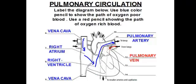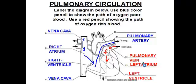Once the blood leaves the pulmonary veins, it gets dumped into the left atrium. The left atrium will then contract, sending the blood into the left ventricle. The left ventricle will then contract, sending this blood through the donut-shaped vessel called the aorta. The aorta will then send the blood out through different vessels throughout the entire body. So this is the pulmonary circulation pathway.